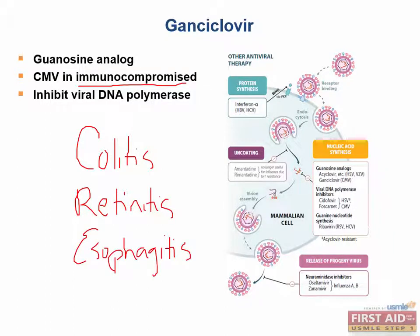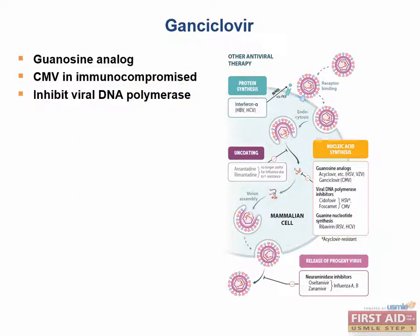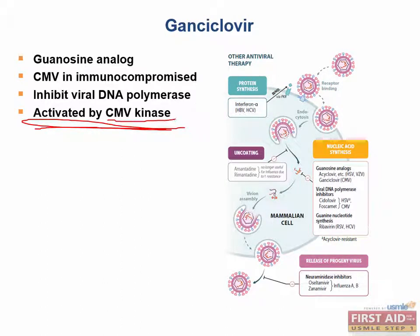To understand the mechanism of action of Ganciclovir, it has the same mechanism of action as acyclovir or valacyclovir. It is a guanosine analog that inhibits the viral DNA polymerase. It is important to note that Ganciclovir is specific only to CMV virus because it is activated by a kinase specific to CMV.